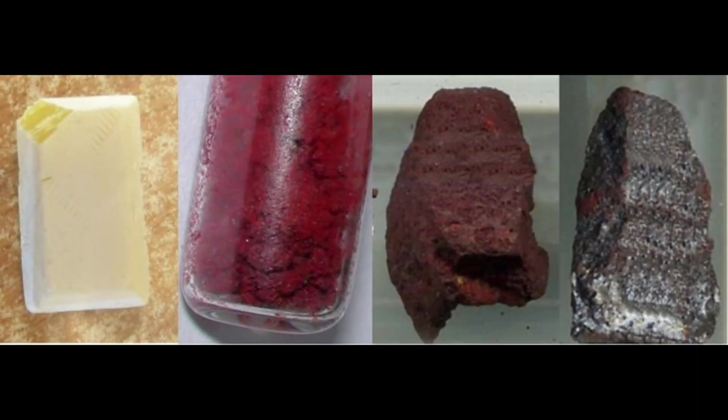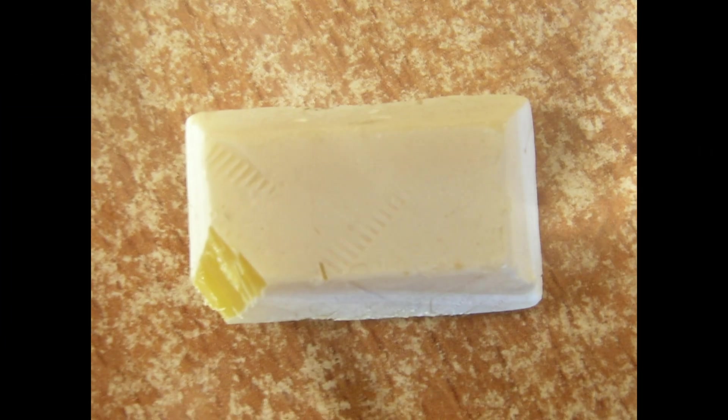Now phosphorus occurs in several allotropes or different structural forms, each with unique properties. So let's dive into the most significant ones. So let's start with white phosphorus. A waxy white solid, highly reactive, glows in the dark due to chemiluminescence and ignites spontaneously in air.